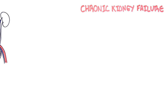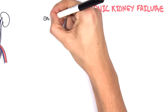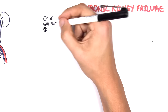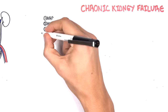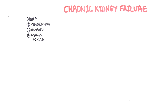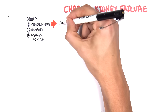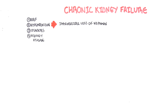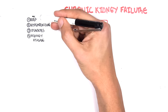There are many causes of chronic kidney failure, and these include acute kidney injury or acute kidney failure, hypertension, diabetes, and other kidney diseases such as polycystic kidney disease. All of these can lead to an irreversible loss of nephrons, which is chronic kidney failure or disease.